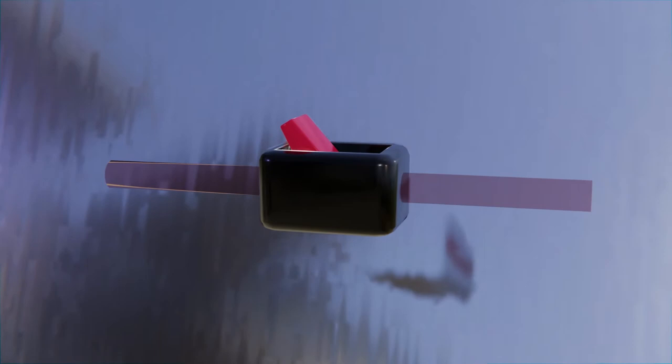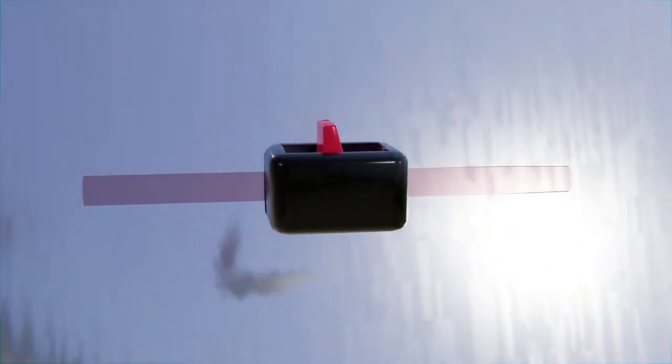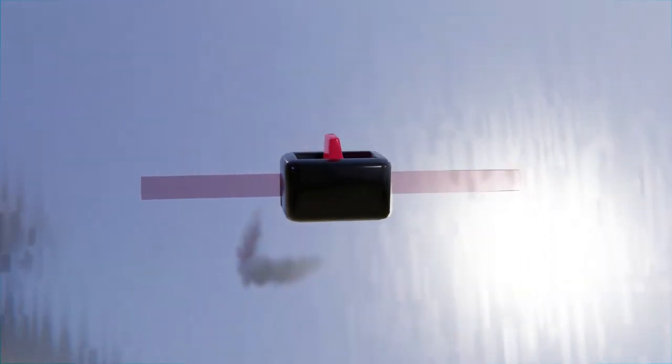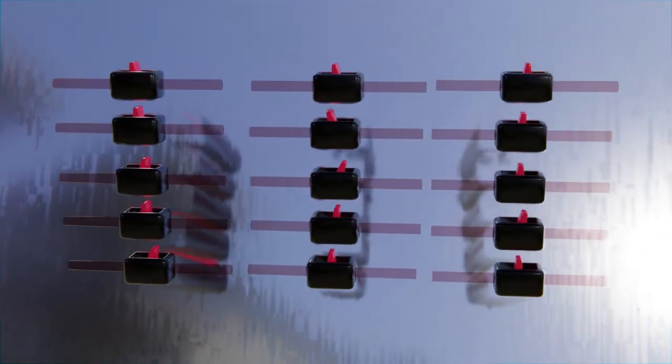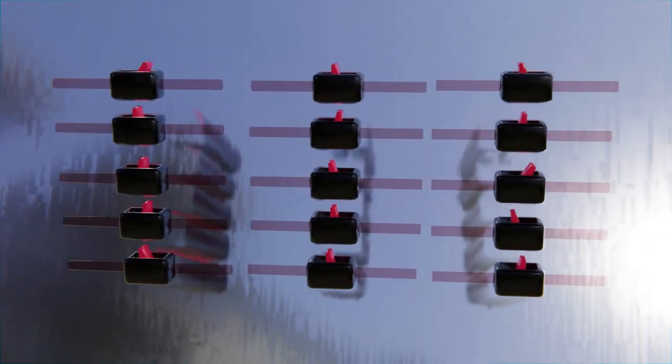The second option we have to improve the capacity of a processor is to increase the number of transistors that work together. This last way of improvement may seem easier, but it generates several related problems.